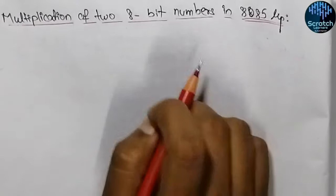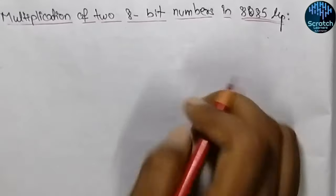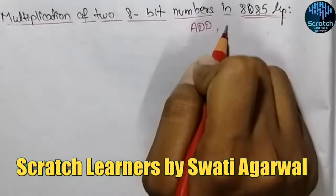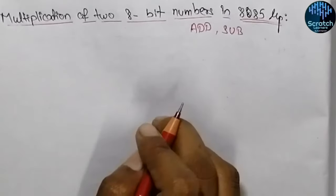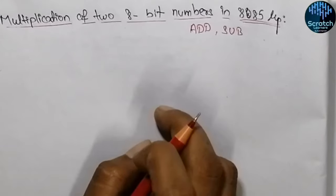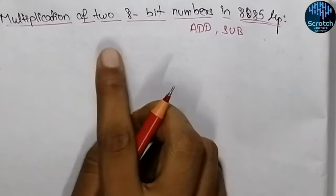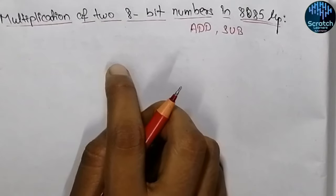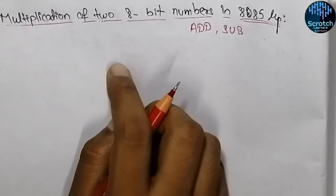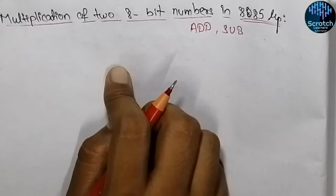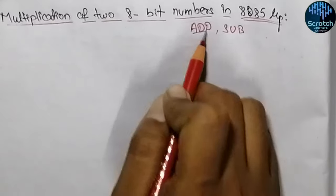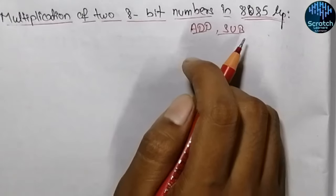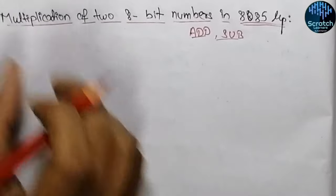We know in assembly language programming, we have instructions for add and for subtraction. But there is no specific instruction for performing multiplication or division of two numbers. So how we will do the multiplication and division? We will use add and subtraction instructions multiple times so that it works as multiplication.